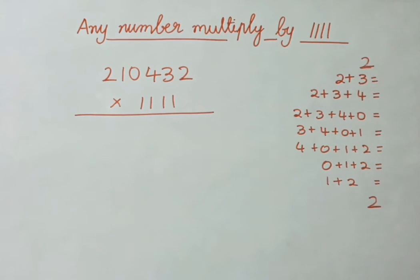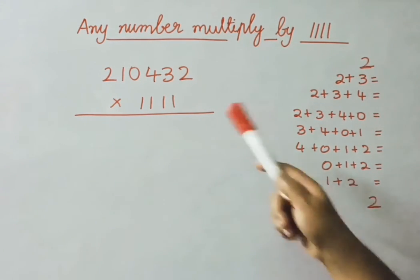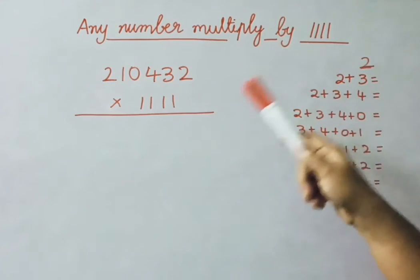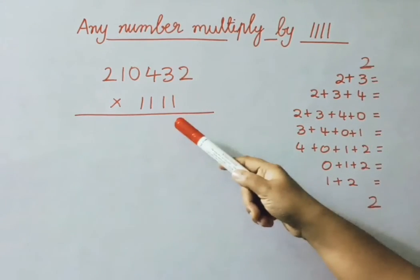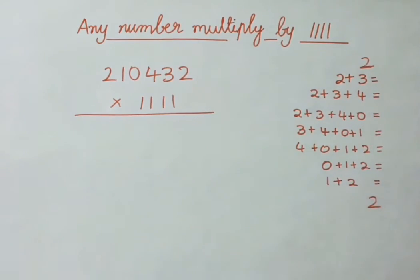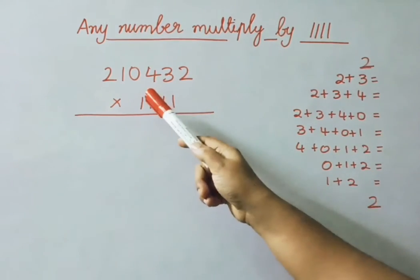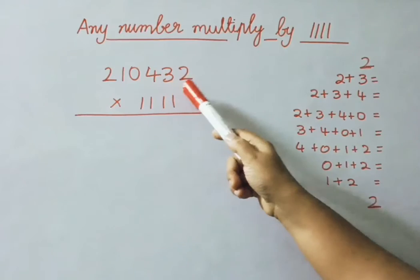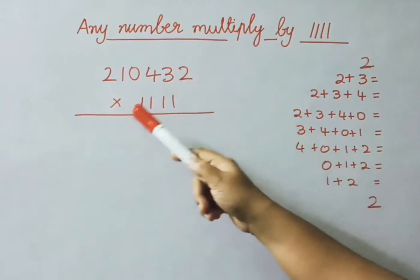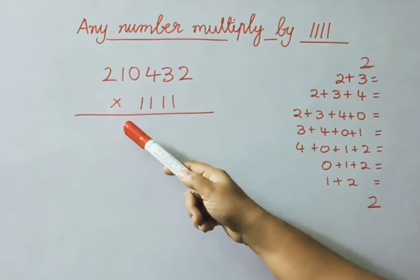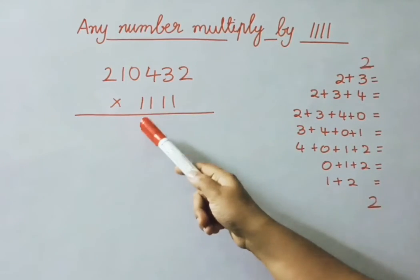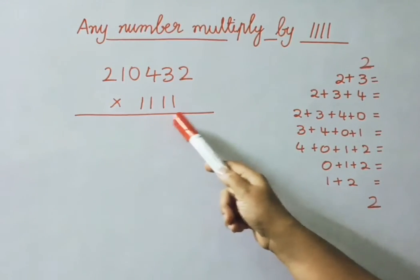Hello everyone. Today we are going to learn how to multiply any number by 1111. See the first example: 2,10,432 multiplied by 1111.